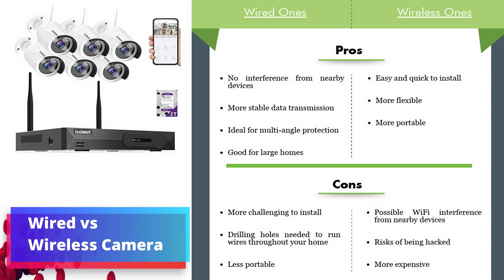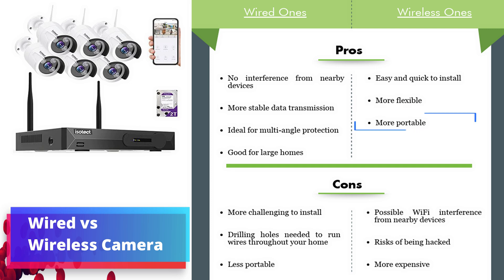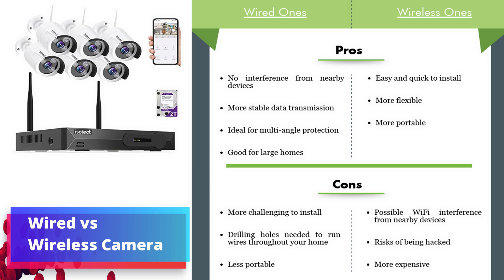The pros of wireless cameras are that they are easy and quick to install, more flexible, and more portable. The cons or disadvantages of wired cameras are that they are more challenging to install, requiring drilling and holes for running the cable, and they are also less portable.